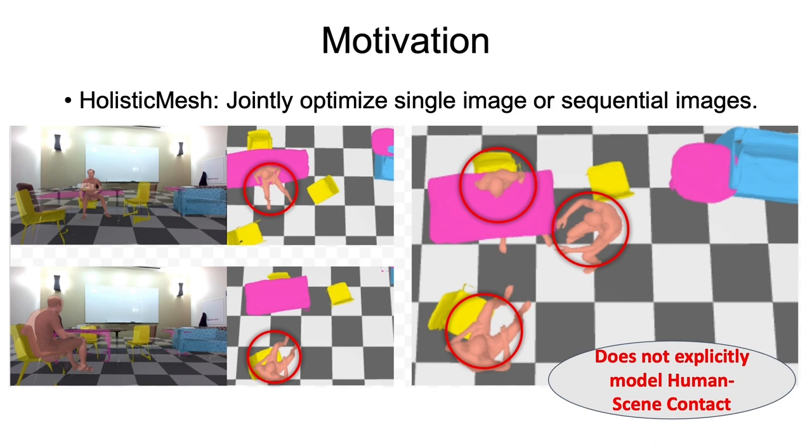Humans interpenetrate objects even when the 3D scenes and humans are jointly optimized with single or sequential images without explicitly modeling human scene contact.